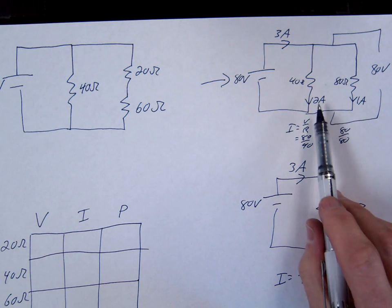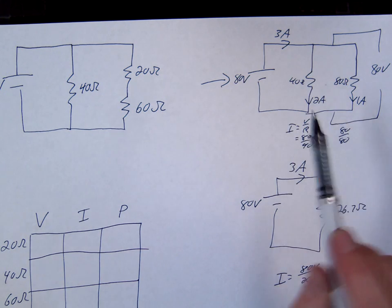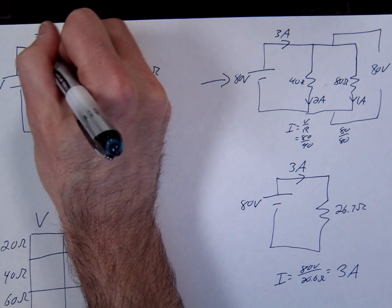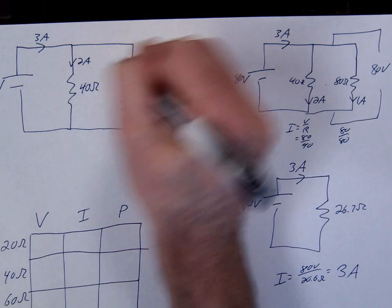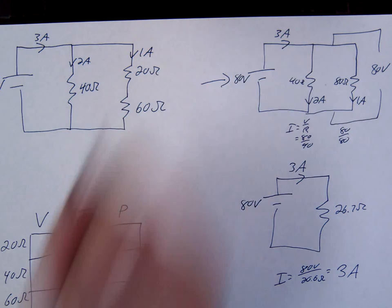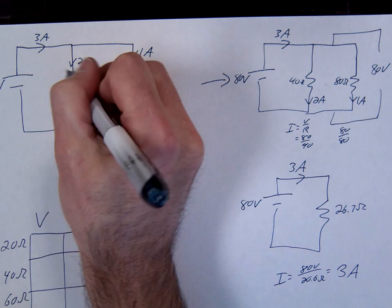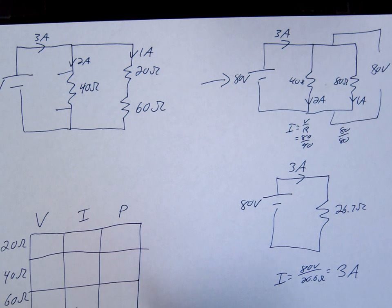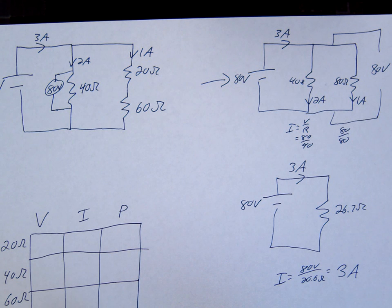Do a mini check. 2 plus 1. Total, 3. Okay, let's just place everything that we know here. So we know 3 amps is the current through here. We know 2 amps is coming through this branch. We know 1 amp is coming through this branch. And we know one other thing. What's that? The voltage across the 40 is 80. 80 volts across that.